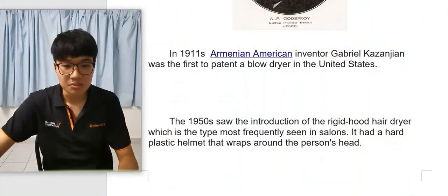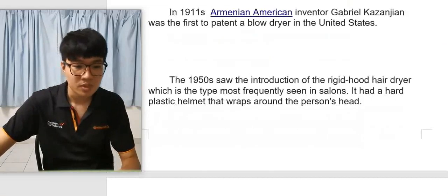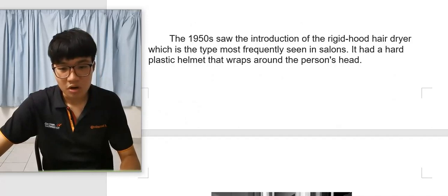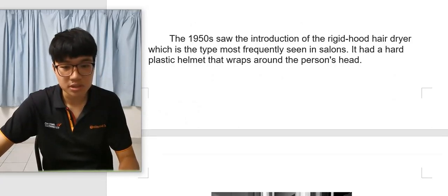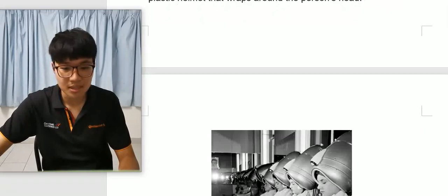In 1911, Armenian-American inventor Gabriel Kazanjian was the first to patent a blow dryer in the United States. The 1950s saw the introduction of the rigid hood hair dryer, which is the type most frequently seen in salons. It had a hard plastic helmet that wraps around the person's head.